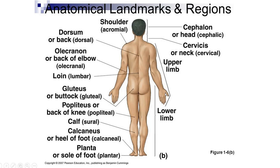The heel is called calcaneus, and the sole of the foot is called planta. Here you have the shoulder, called acromial — the acromial joint. Cephalic means head, cervical means neck. The loin area is the lumbar region, where you have the kidneys.